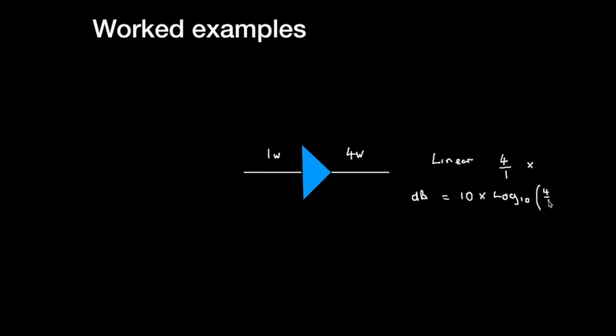Now if we put in 4 into our calculator and press the log button, we get this part here as 0.6020, and if we multiply it by 10 we have 6 dB, which should be familiar to us.